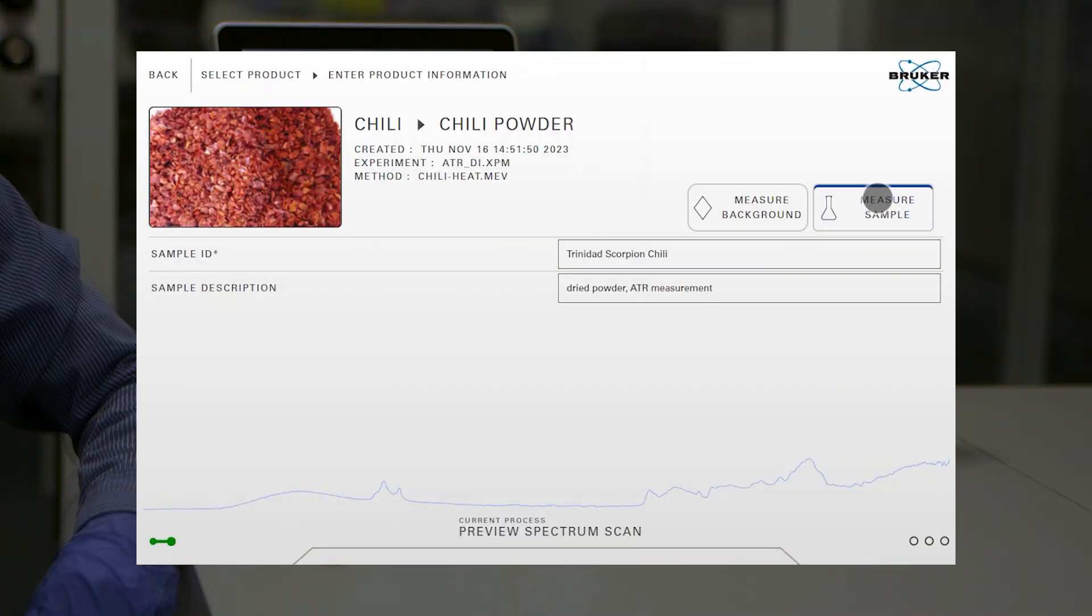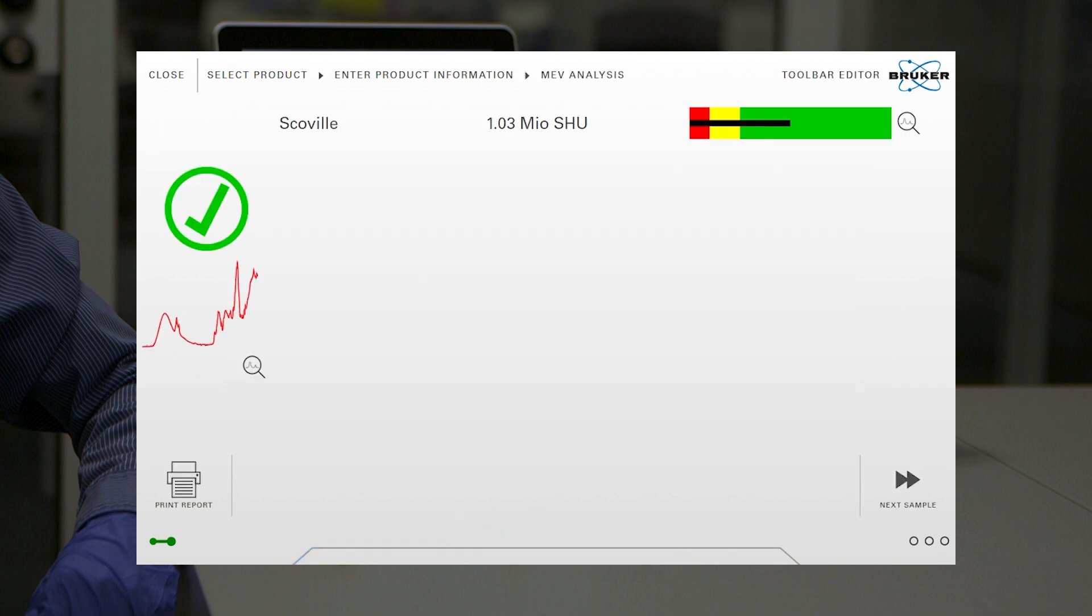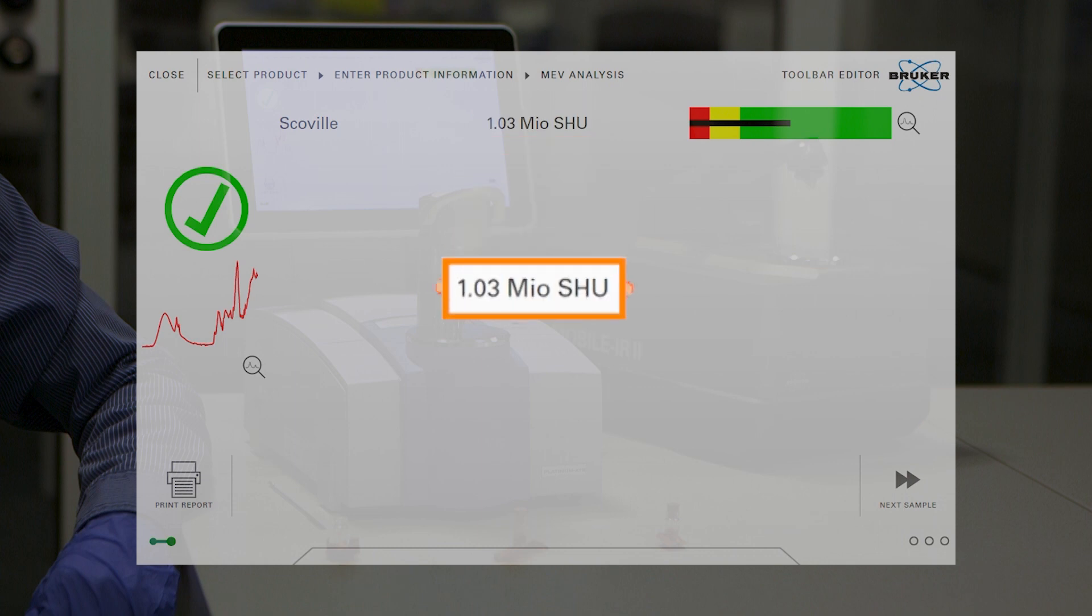We start the measurement and after a few seconds we get our result. The Alpha 2 tells us that this chili powder boasts an astounding 1 million Scoville units.